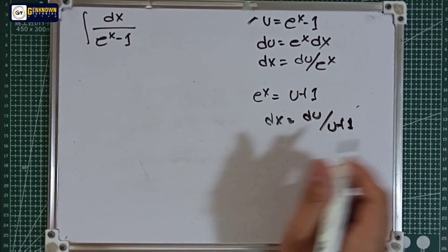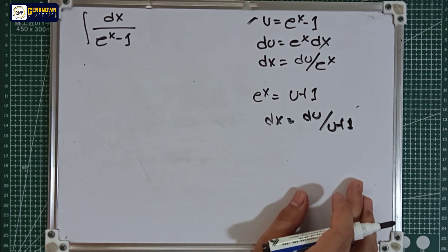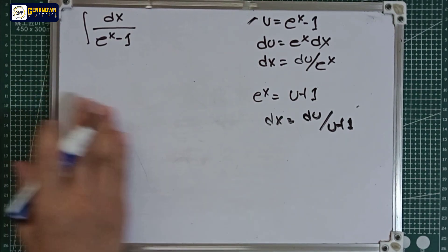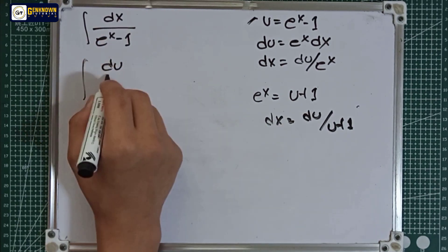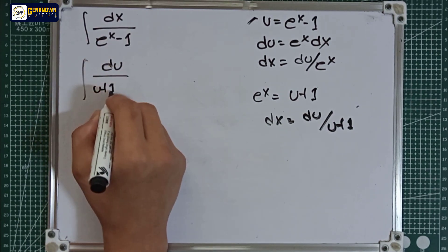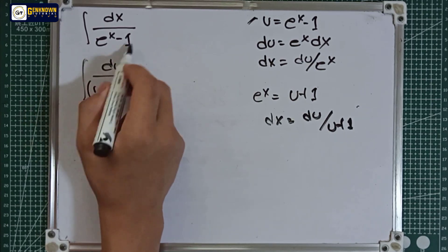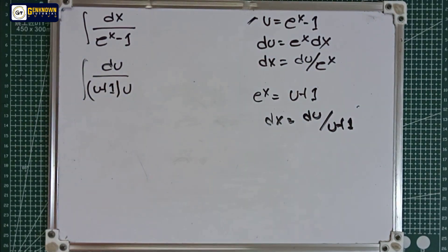Now we will substitute the value of the certain functions or the certain variables. We have the integral of dx is du over u plus 1 multiplied by this u.